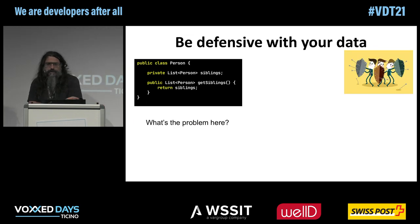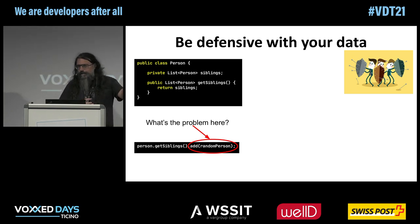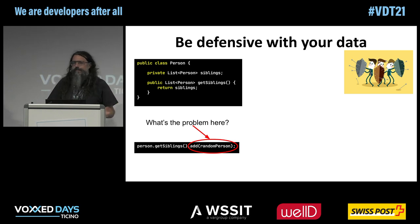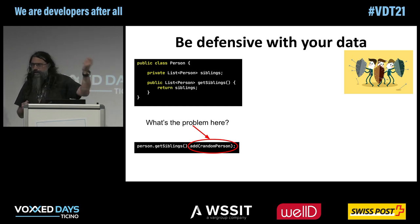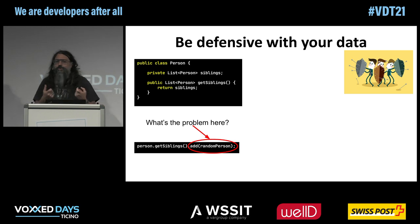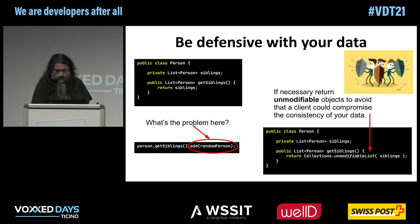Another important thing is to defend your data — be defensive. Sometimes you have a getter that returns your live data structure. The problem is that it's the live list of siblings of that person. So by mistake or even maliciously, someone can call getSiblings, get the live list, and then add stuff into that list, corrupting the sibling data. The obvious way to fix this is to return an unmodifiable collection, preventing your user from corrupting the data.